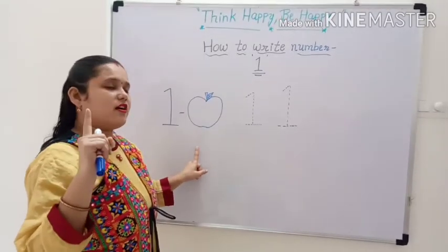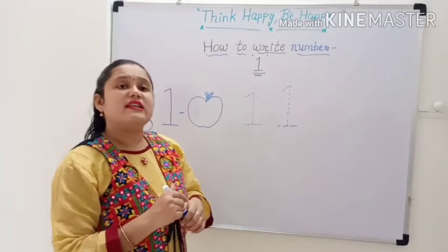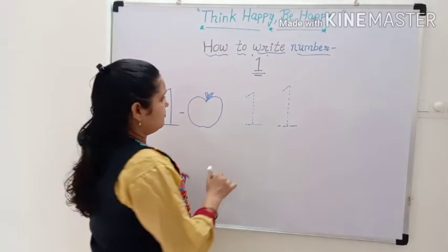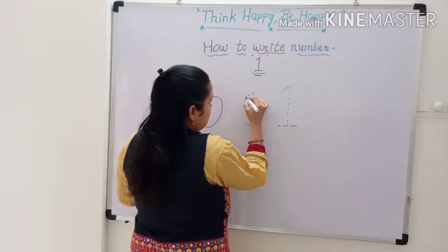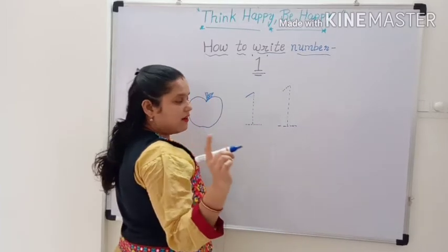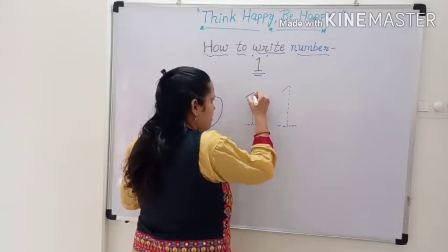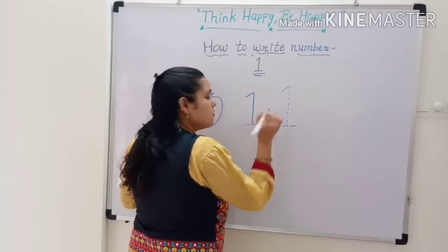Only one. Now let's see how to trace number one. Let's start. First, we make a small slanting line. After that, draw a standing line. Then stop.